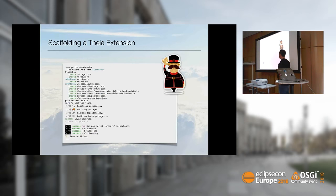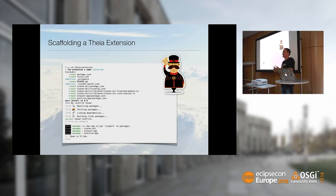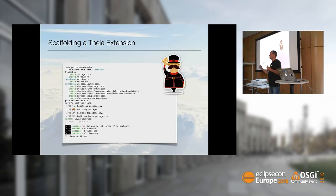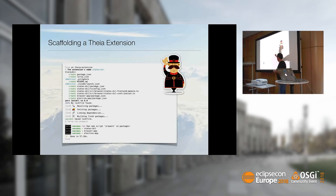How do we do this? We created a Yeoman generator that scaffolds a Theia application and an extension for you. It creates basically three NPM packages. One is for your extension, where your domain-specific code goes in. One defines the entire application — so you specify what other extensions should be part of this application, like if you want Git support. And the last one is for the browser, and a separate one for the rich client app that runs with Electron. It's maybe interesting to know that getting the rich client is almost as easy as what I'm showing here.